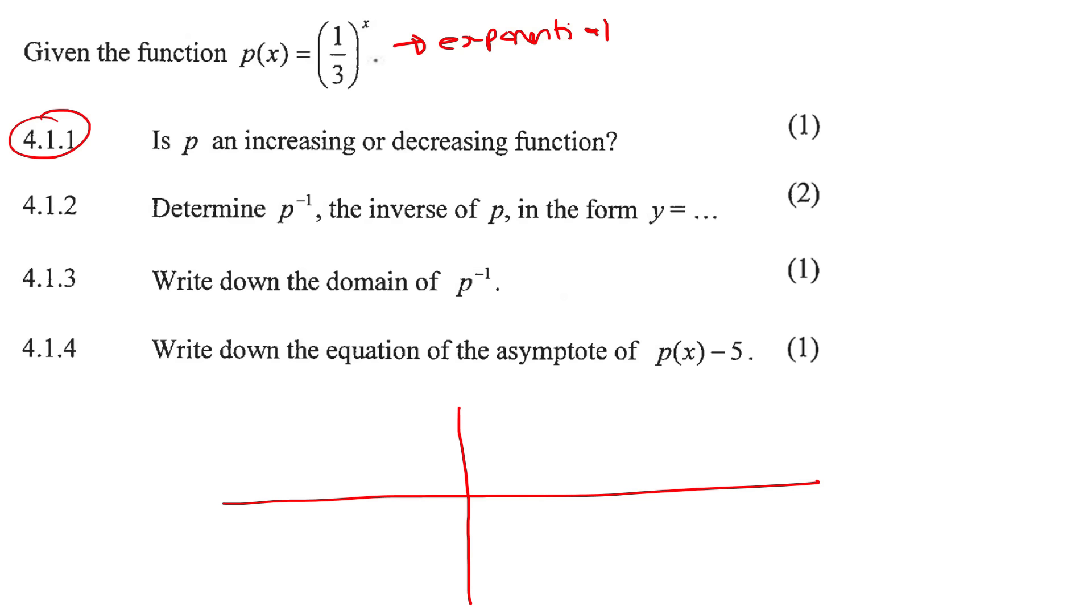But it's not correct to say because it's a fraction. I could give you a fraction like this: f of x is equal to 9 over 8. And guess what? This one is actually increasing. Why? It's because if you type this number on your calculator, you'll see that it is larger than 1. So when the number is larger than 1, then it increases.